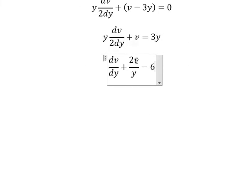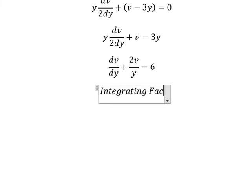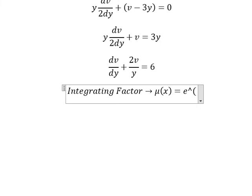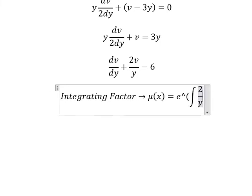We see that we have v and first derivative of the function, we can use the integrating factor. So we have mu x equals to e to the power of the integral 2 over y dy.